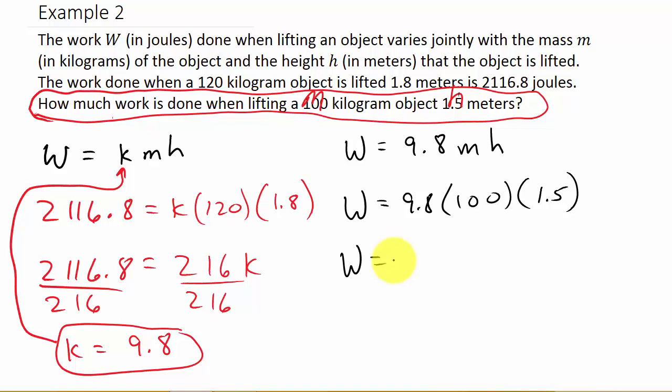So the work, let's see, the work is 9.8 times 100 times 1.5. And that's 1,470 joules. And that's the work done.